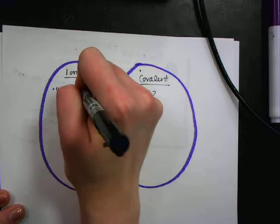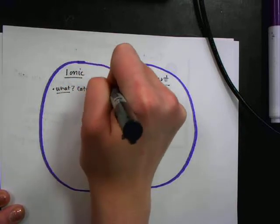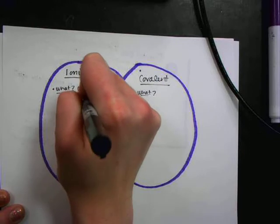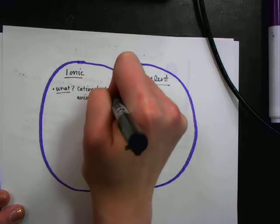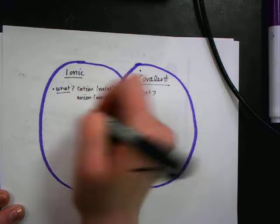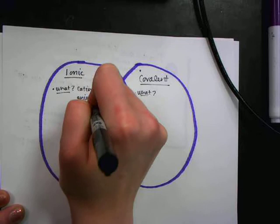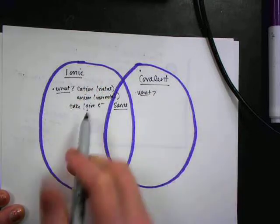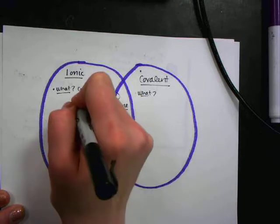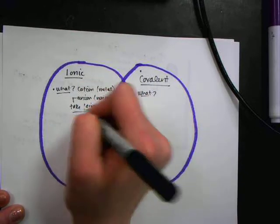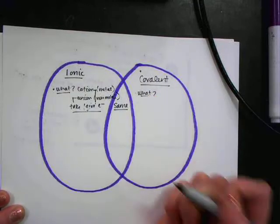Well, an ionic bond will have a cation, which is a metal, and an anion, a non-metal, that are going to take or give electrons. So in ionic bonds, you have electrons being taken or given. The anions take in electrons, that's why they're negative, and the cations give up an electron to become positive.